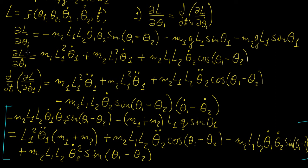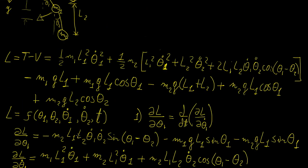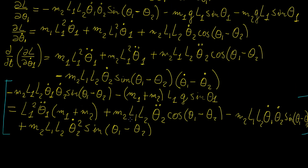We've performed the differentiation with respect to theta1 and theta1 dot, and now we're going to do the same for theta2 and theta2 dot. It gets complicated — you might wonder if this really is the equation of motion. It turns out that because we have a coupled system of two pendulums, the equations of motion are quite complicated. The different masses and different lengths add to that complexity, but this encapsulates the whole motion.